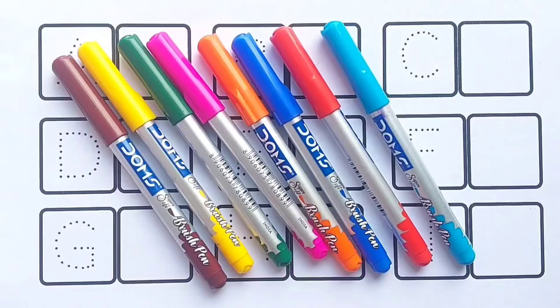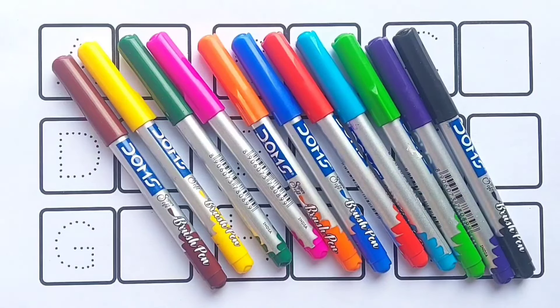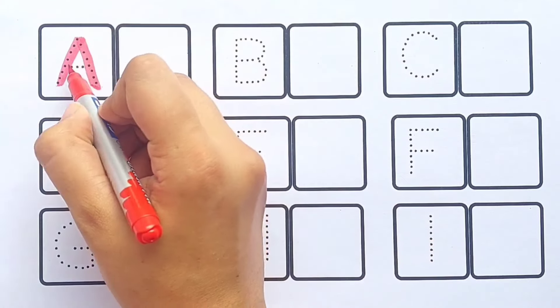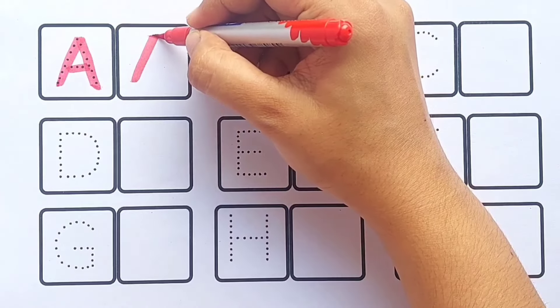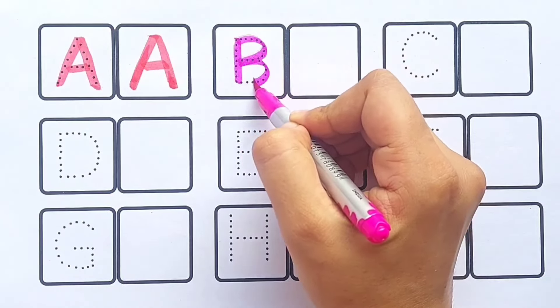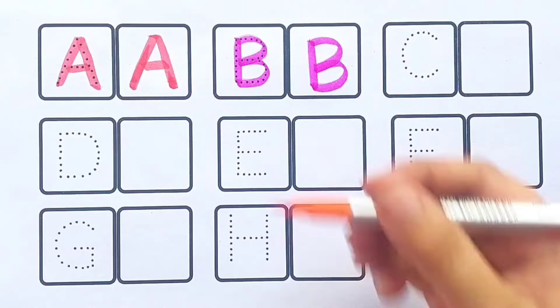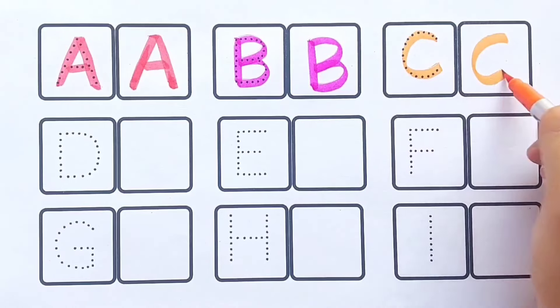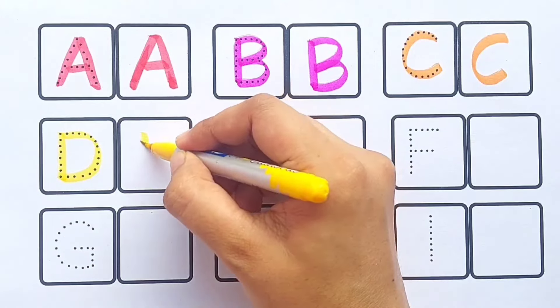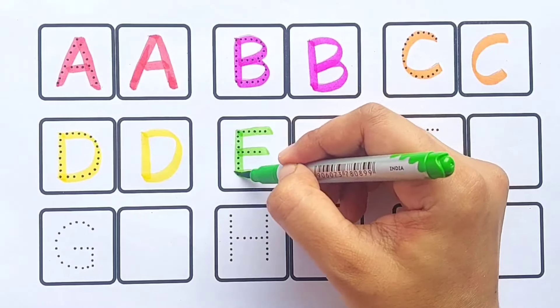A A for apple, pink color. B B for banana, orange color. C C for cat, yellow color. D D for dog, light green color. E E for elephant.